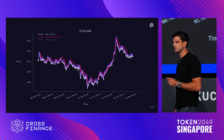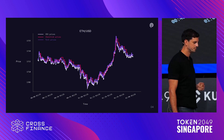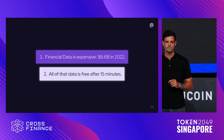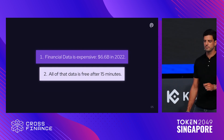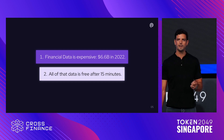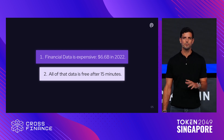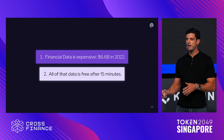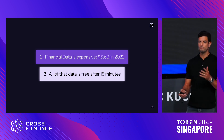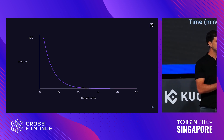There's important nuance here, which is how old the data is by the time it gets onto the blockchain. Two general points about financial market data: number one, financial market data is expensive — in 2022, users willingly paid $6.6 billion for financial market data in the real world. Number two, all that data becomes free after about 15 minutes. So data is maximally valuable at t=0 and decays as a function of time.